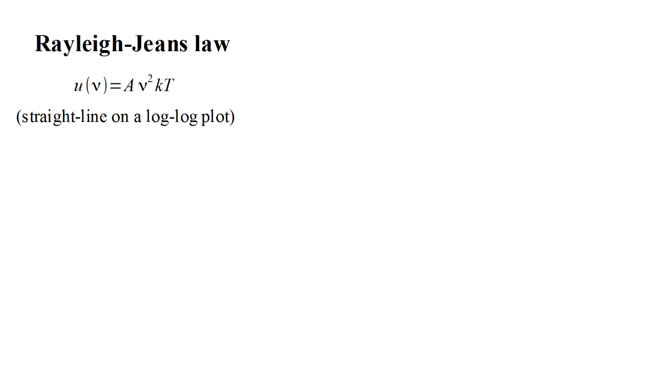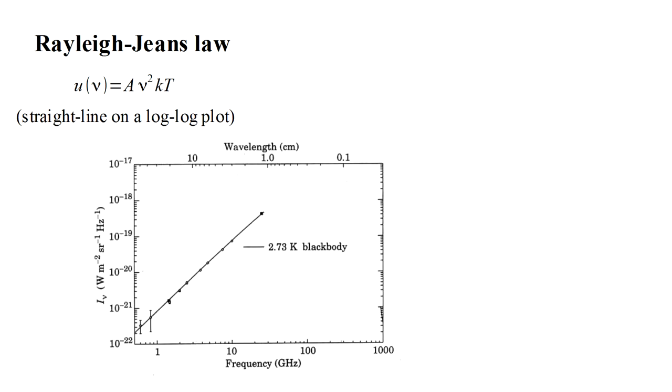Let's see how this stacks up against observation for the largest box we know of, the universe. Here we have the intensity of the cosmic background radiation, the afterglow of the Big Bang versus frequency. The points with error bars are observed values and the line is the Rayleigh-Jeans Law. The agreement is excellent, at least for the range of frequencies shown.